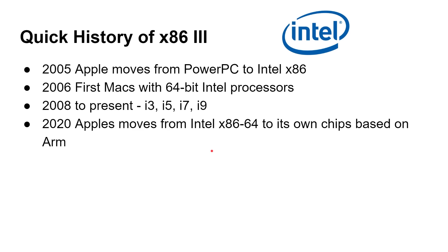Looking at the history of Apple and Intel: in 2005, Apple moved from PowerPC over to x86. In 2006, you get the first Macs with x86-64-bit processors. Then Intel carried on making processors — the i3, the i5, the i7, the i9 from 2008 onwards. And then now in 2020, Apple moved from x86-64 to its own chips based on the ARM architecture.